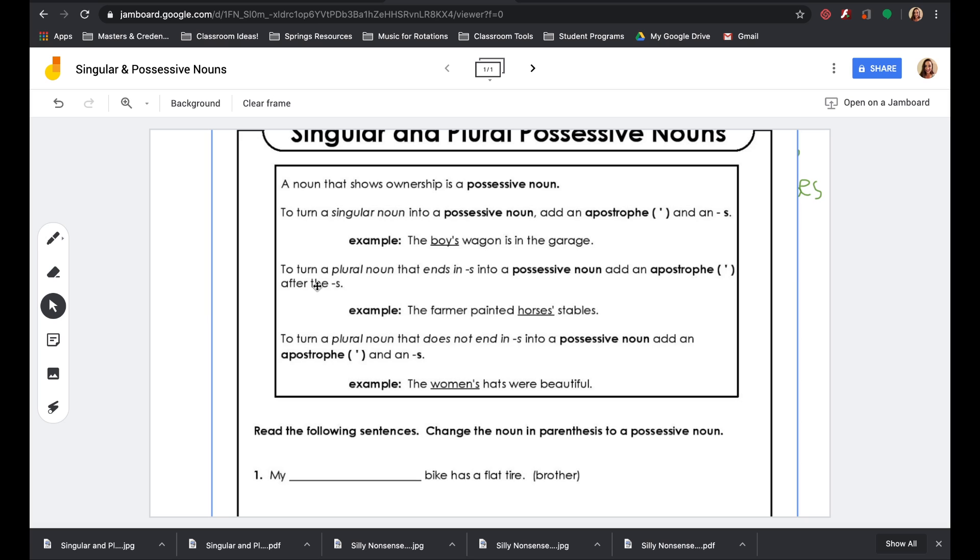The other part says to turn a plural noun that ends in S into a possessive noun, add an apostrophe after the S. So it doesn't go before the S like this one, it goes after the S. Let's look at their example. The farmer painted horses stables. Apostrophe goes after the S.